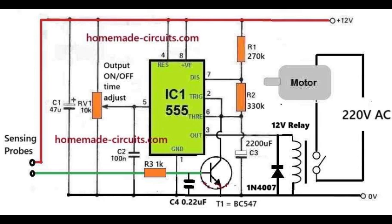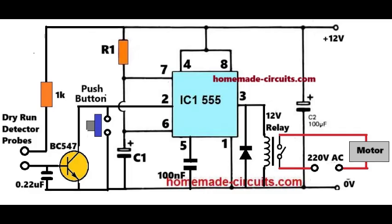If you do not want the pump motor to be switched on-off repeatedly, rather want to make the process manual through a push-button operation, you can implement it using the next diagram which is shown on your screen. Here, the IC555 is configured as a monostable timer for activating the pump motor for a predetermined duration, as set by the values of the R1 and C1 timing components.